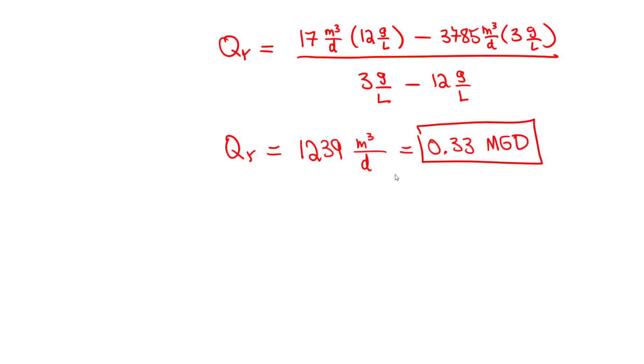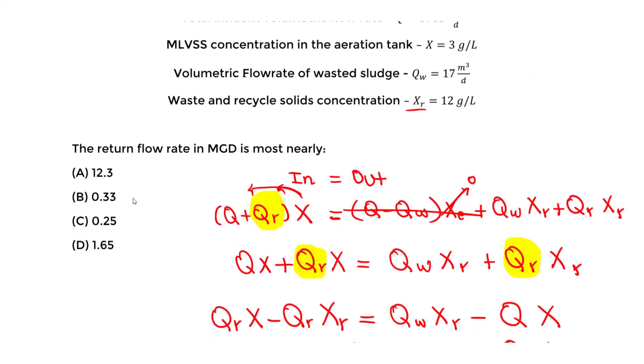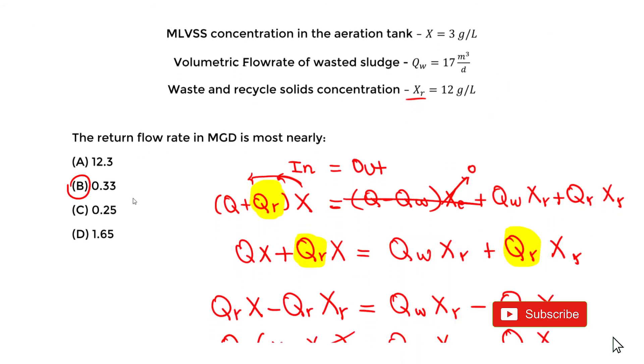So our answer is 0.33 million gallons per day, which corresponds to answer choice B.